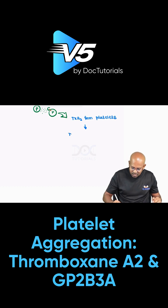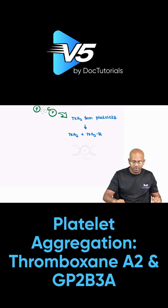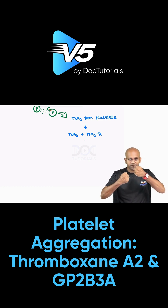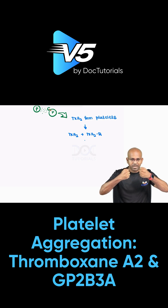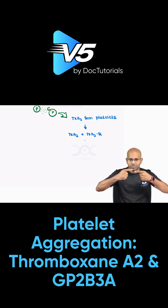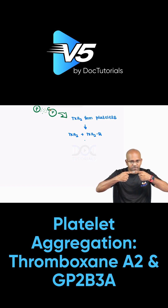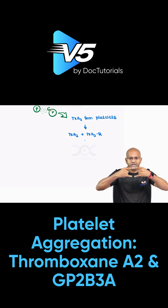Whenever thromboxane A2 is released, it will bind with its own receptor on the other platelets. So thromboxane A2 will bind with the thromboxane A2 receptor on other platelets. Imagine this: the first platelet releases thromboxane A2, which binds with the thromboxane A2 receptors of the second platelet. When this receptor is stimulated, there will be an interlink forming between the two platelets.